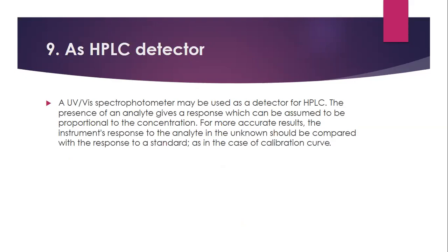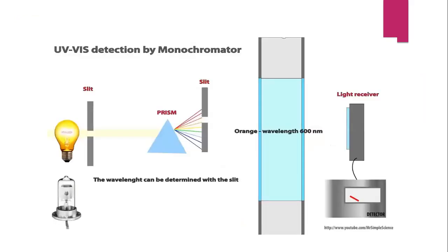The next application is the HPLC detector. A UV visible spectrophotometer may be used as a detector for HPLC. The presence of an analyte gives a response that can be assumed proportional to the concentration. For more accurate results, the instrument's response to the analyte should be compared with the response to a standard, as in the case of a calibration curve. This is shown in the visual representation of UV-visible detection for HPLC.